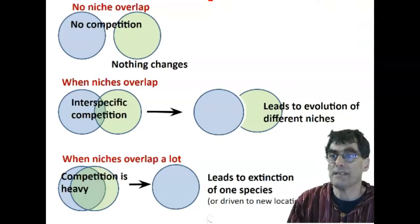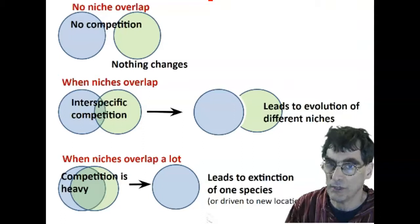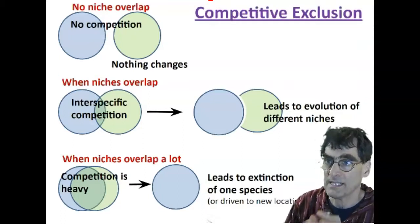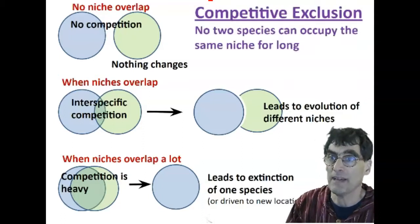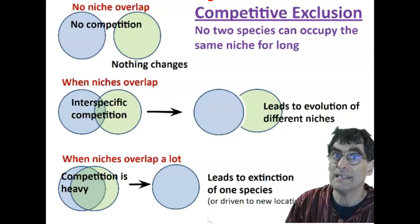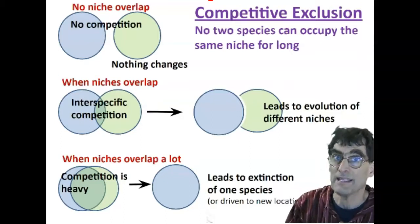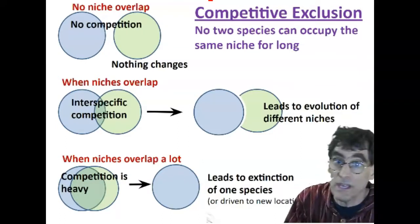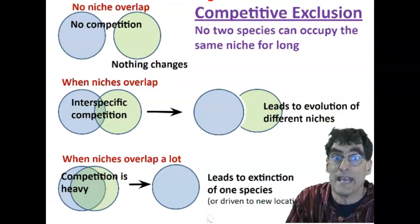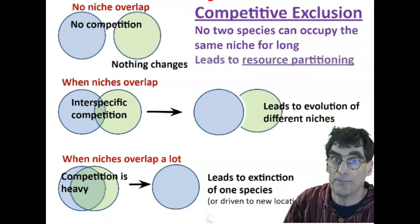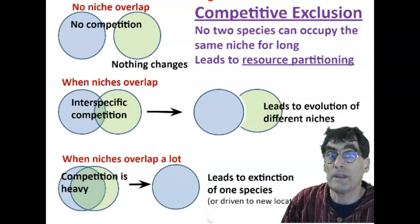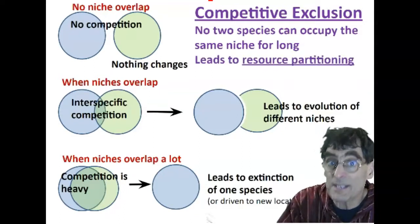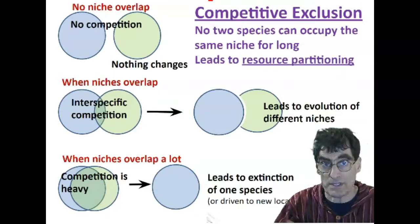So let's see how this relates to resource partitioning. Because this is competitive exclusion. Competitive exclusion really states that no two species can occupy the same niche for long. They will compete and one will exclude the other, either entirely or at least in that specific niche area. What this does is it leads to partitioning the resources.